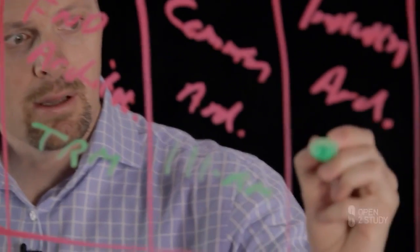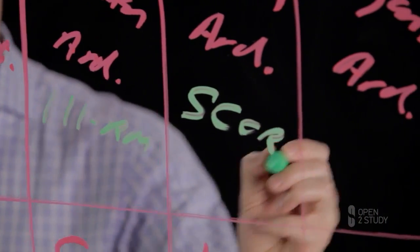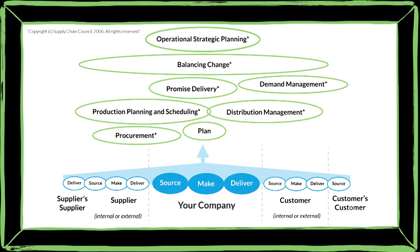And then on this side over here, you've got the industry ones. And just as an example, on your screen now, there's the SCORE model, which is the Supplier Chain Operations Reference Model. And that's an industry-based reference model specifically designed for the supply chain industry. And you can apply that to your organization as well.